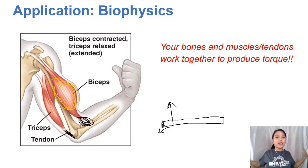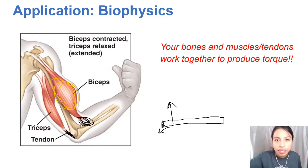Let's look at the past year question. First one, forearm torque. Look at that diagram on the right. A man holds a load stationary in his hand. The combined weight is 20N. What is the vertical force needed in the biceps?